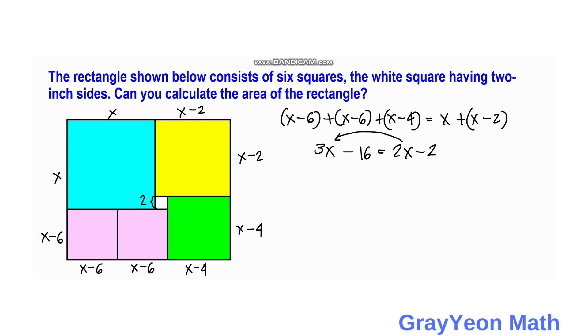Then if we simplify further, we just need to put the two x to the left. So we have three x minus two x is equal to, we need to put this negative 16 to the right, then we have